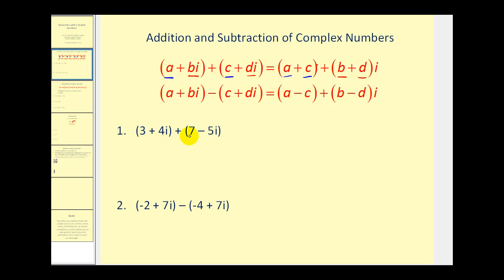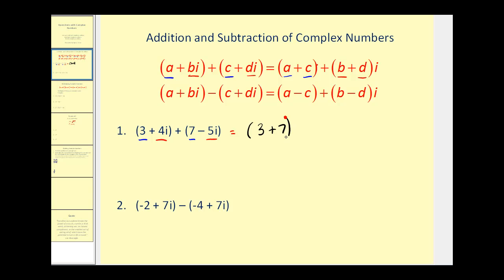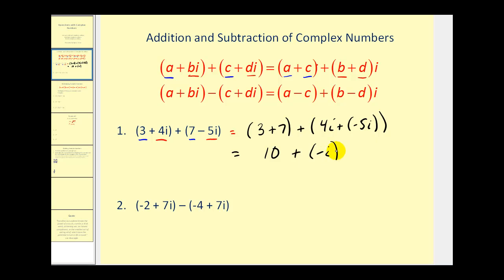So if we take a look at number one: three plus four i plus seven minus five i. Three and seven are the real parts, and four i and negative five i are the imaginary parts. We can add three plus seven for the real parts, and we can also add four i plus negative five i. The result will be ten, and four i plus negative five i would be negative i, but this is normally written as ten minus i.